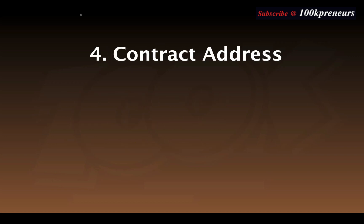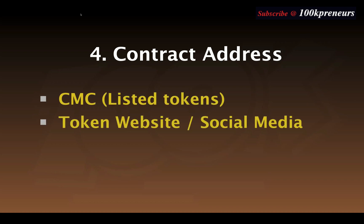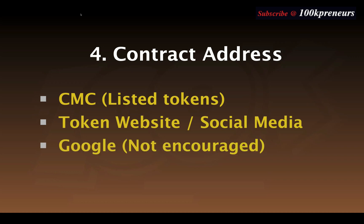To interact with any smart contracts, you have to get the contract address, abbreviated as CA. Some of the places where you can find this contract address include CoinMarketCap if the token is listed, the company's website, or their social media — as I explained previously.